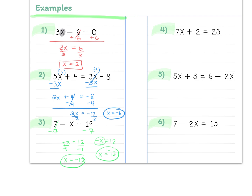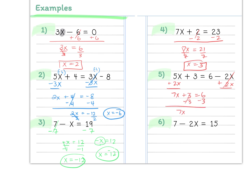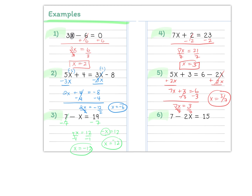Next: 7x plus 2 equals 23. Always do addition and subtraction first — subtract 2 to get 7x equals 21, then divide by 7 to get x equals 3. Then example 5 has variables on both sides — add 2x to both sides to get 7x plus 3 equals 6. Subtract 3 from both sides: 7x equals 3. Divide by 7: x equals 3 sevenths. Not every answer has to be an integer — answers can be fractions, decimals, or zero.